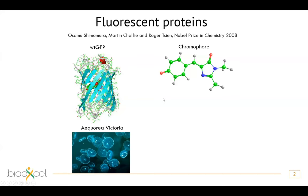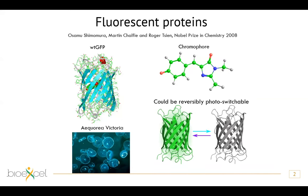Fluorescent proteins, under certain conditions when you illuminate them, start fluorescing. The first type was found in the 1950s in the Aequorea victoria jellyfish. When it was isolated and its structure determined, it appeared to be a beta-barrel structure with a chromophore inside. The chromophore is autocatalytically formed out of three amino acids: tyrosine, glycine, and a third residue that can vary depending on the protein type. One key feature is that these proteins can also be made reversibly switchable between fluorescent and non-fluorescent states.